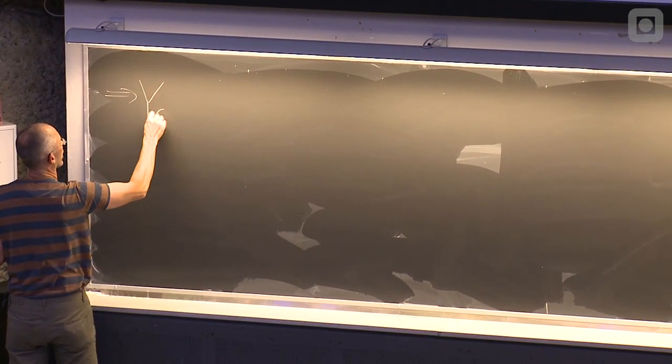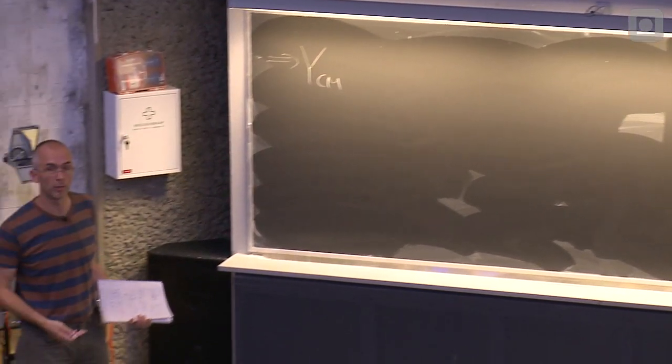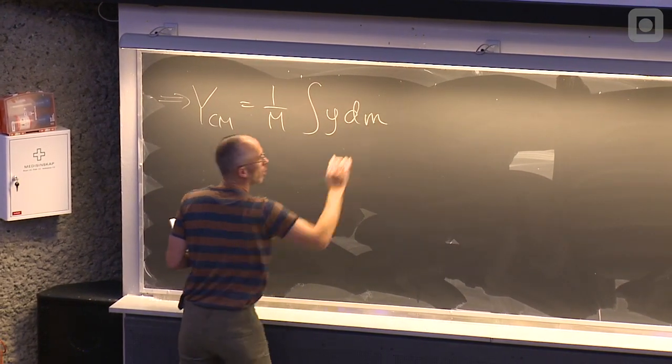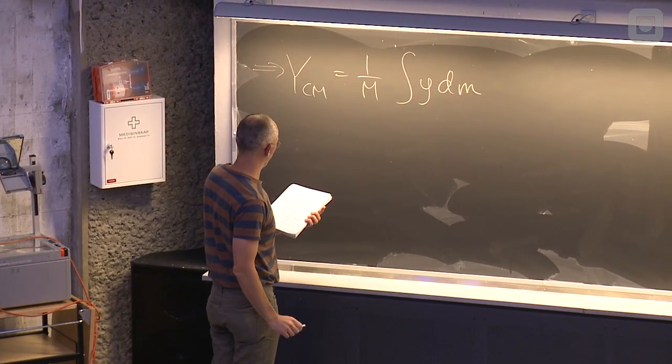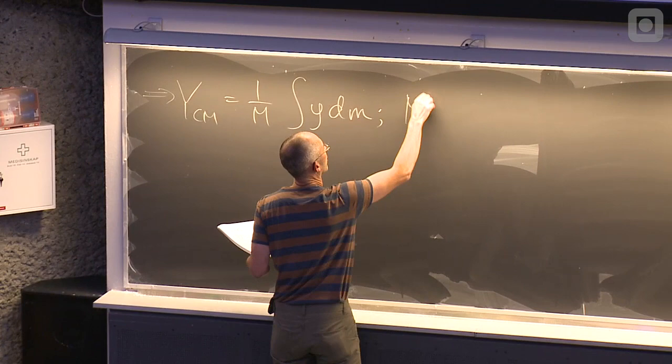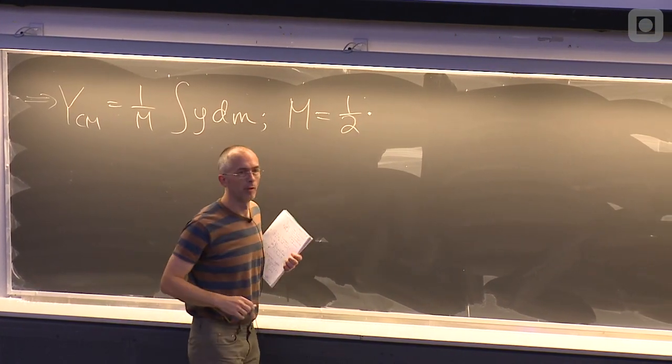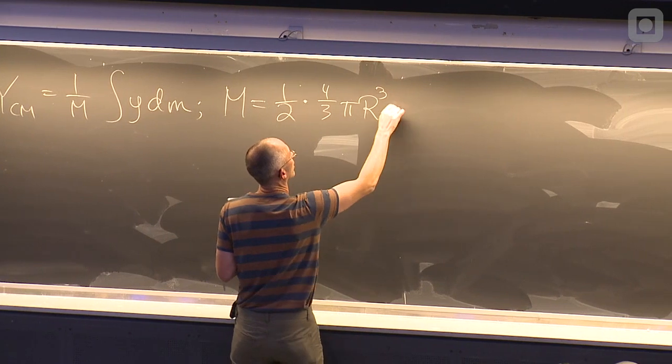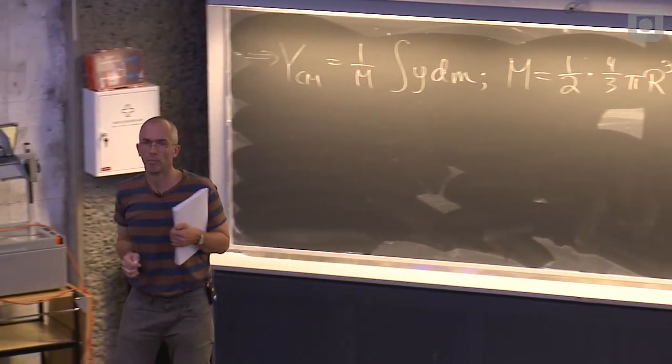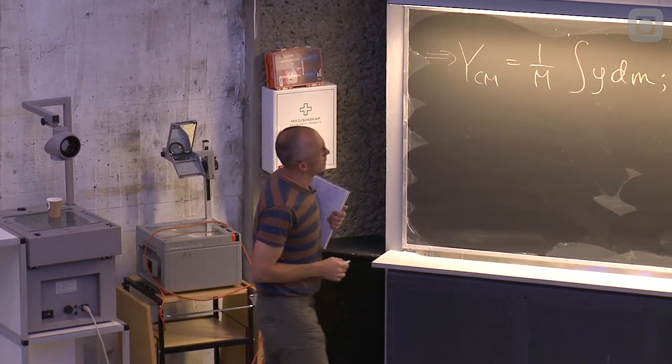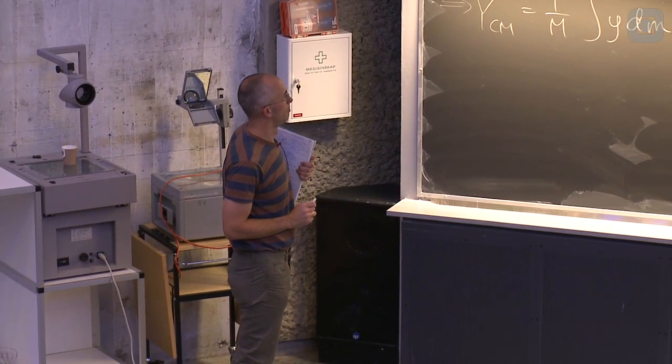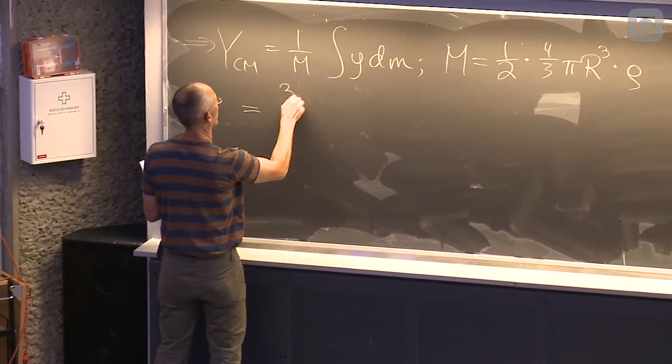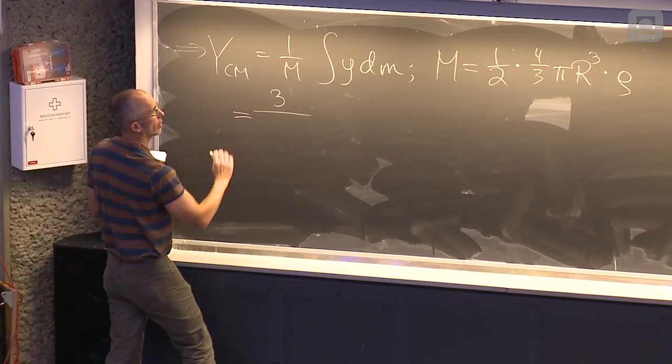We need to figure out that y-component to the mass center. We have said that x- and z-component should be 0 of symmetry grunner. 1 over mass integral y dm, like this before. Massen, det er halvparten av volymet av en kule, gange massetetigheten. Det betyr, skal vi se, 3 i, nevner der blir i telleren når vi tar 1 over m.